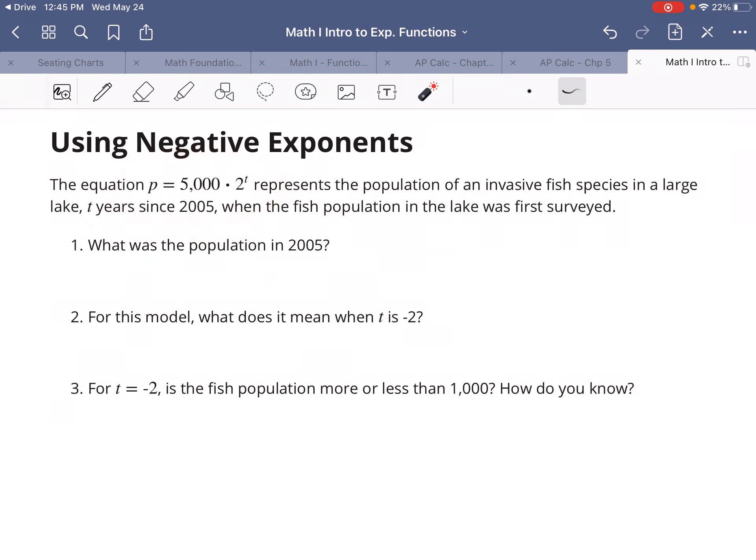Also, for this model, what does it mean when T is negative 2? Well, if T is years since 2005, negative values would be what? My other question, my last question is, if the population is doubling every year, and we know that T equals negative 2, well, from number 2, you should know what that means.